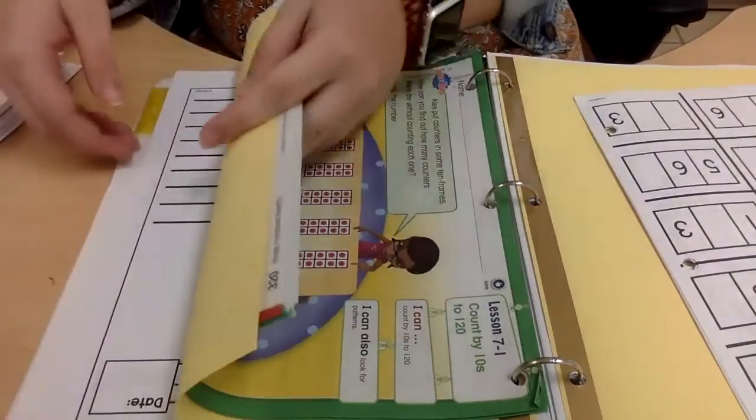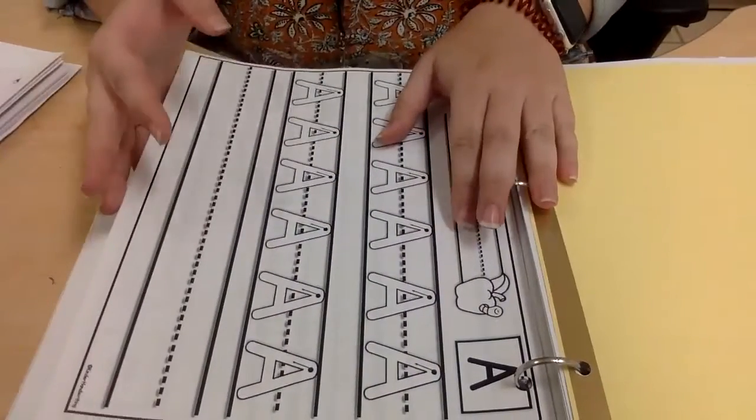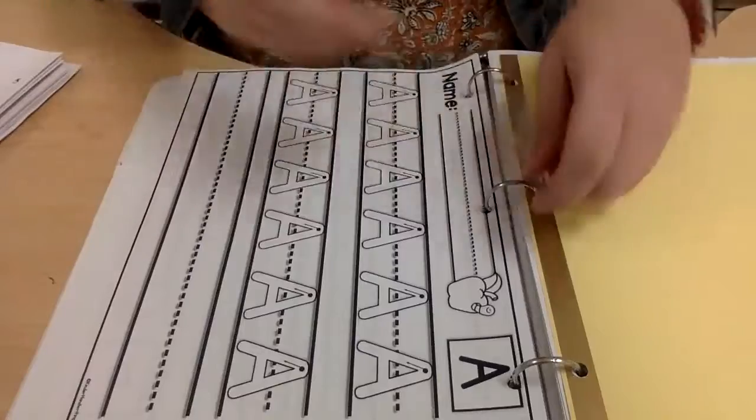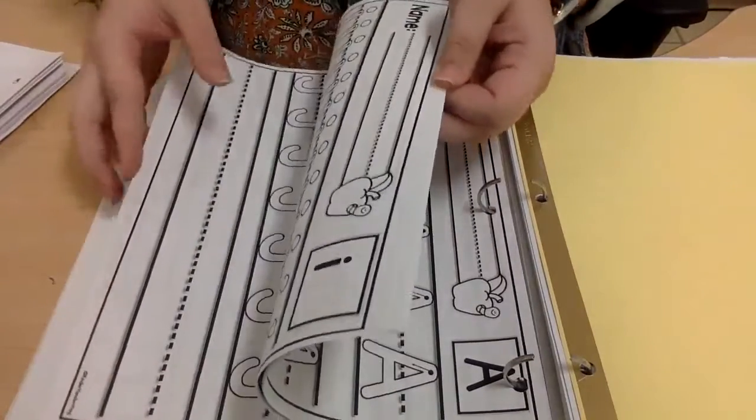In your handwriting tab, which is the yellow tab, we have done the letters A to J. So we want to take out all of those pages from your binder.